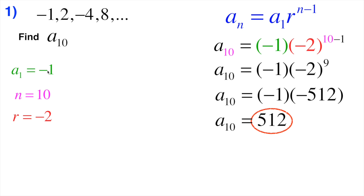The hardest part is really just calculating what the ratio is. You can take any term and divide it by its previous term to find the ratio, as long as it's a geometric sequence — meaning it's being multiplied by a common factor. Then just plug everything into the formula and simplify.